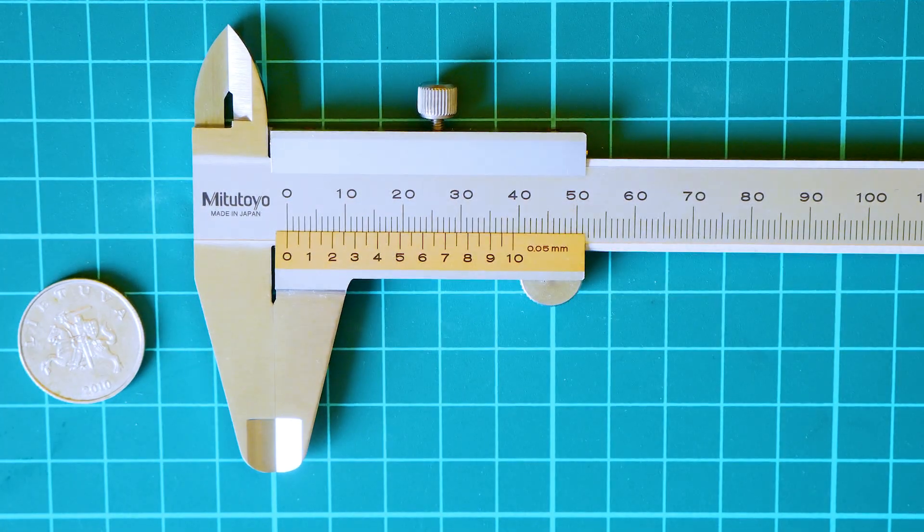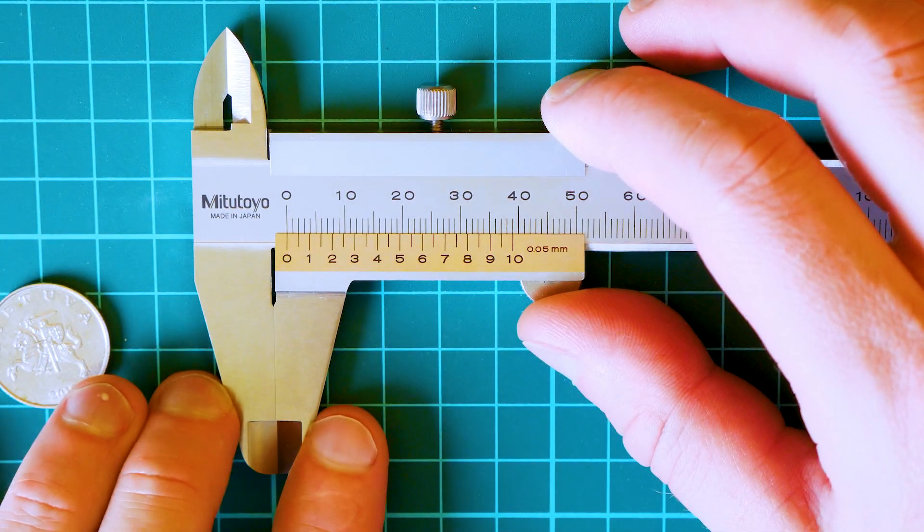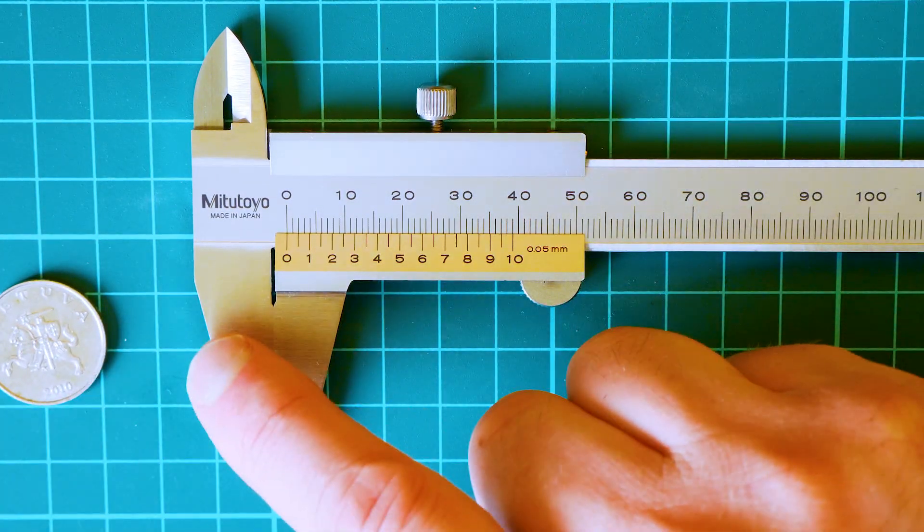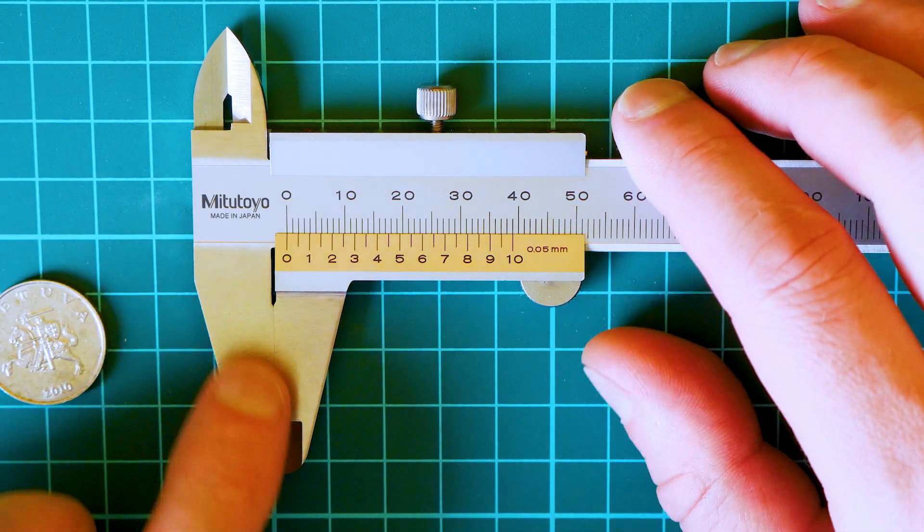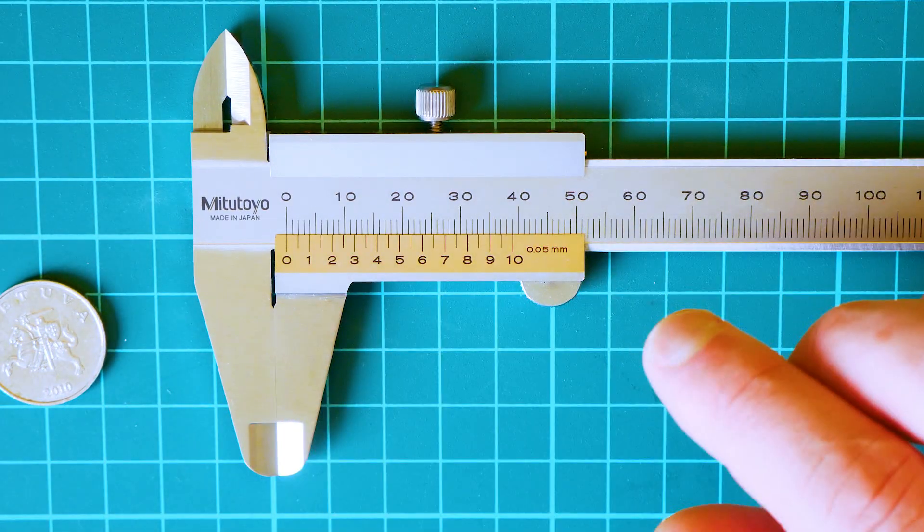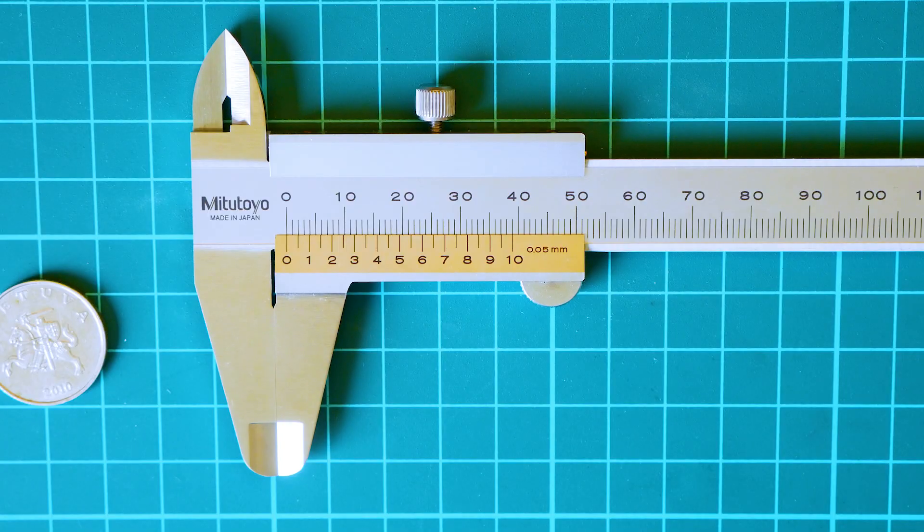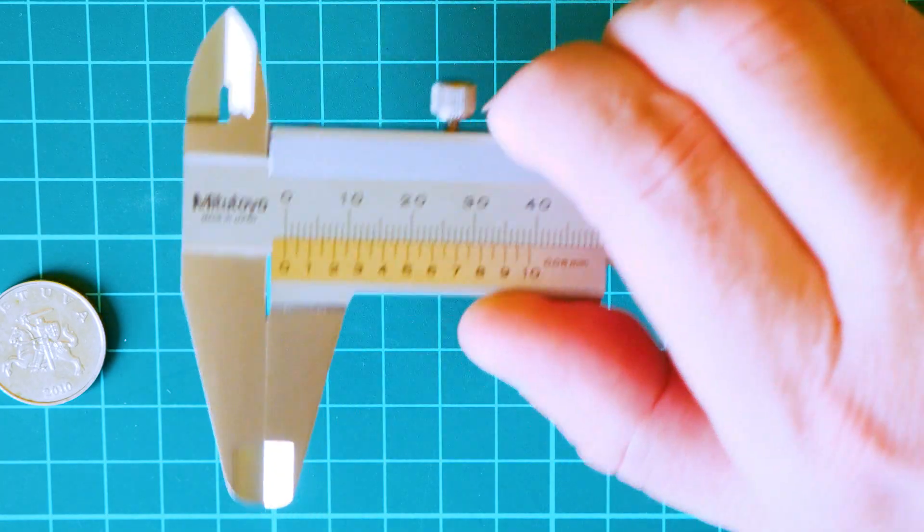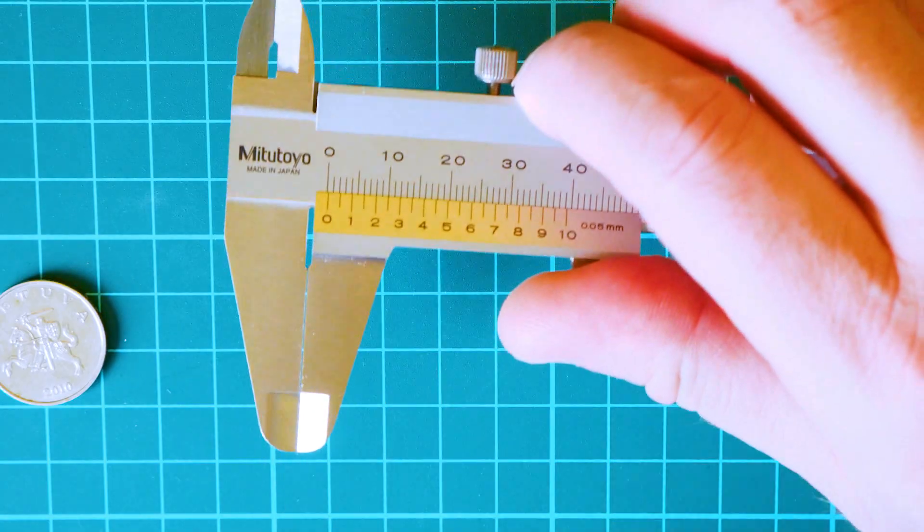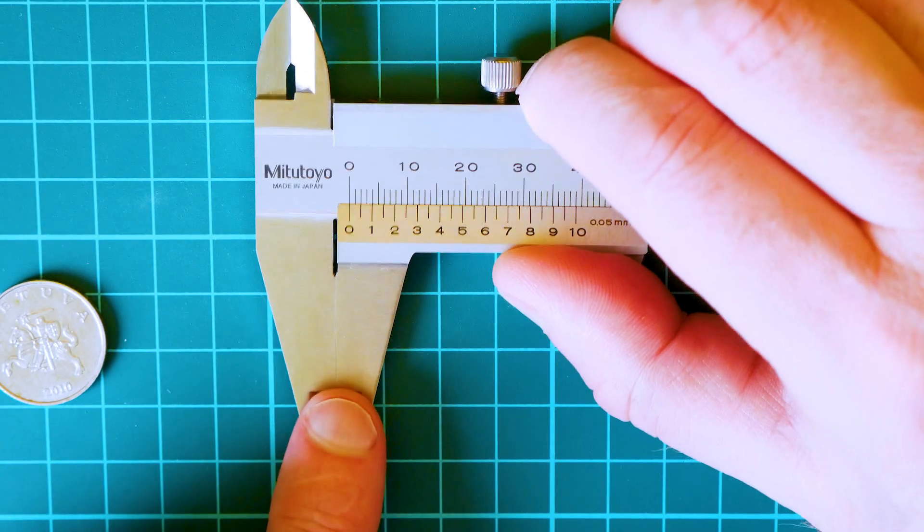To use a Vernier caliper, first make sure your jaws are clean and there is no gap. Sometimes people take paper and rags to clean the jaws here.